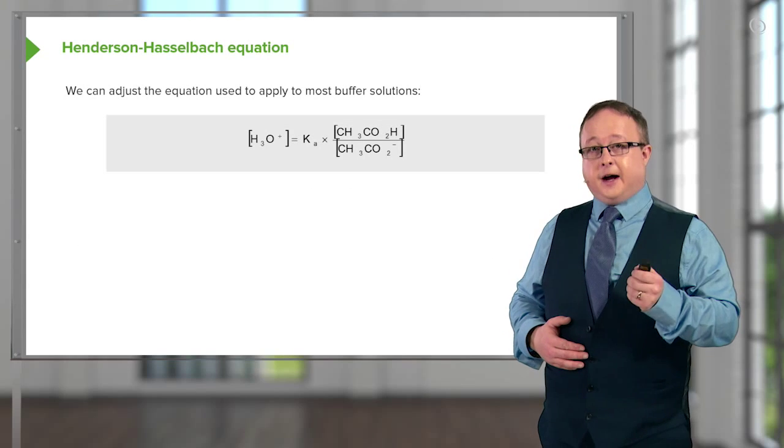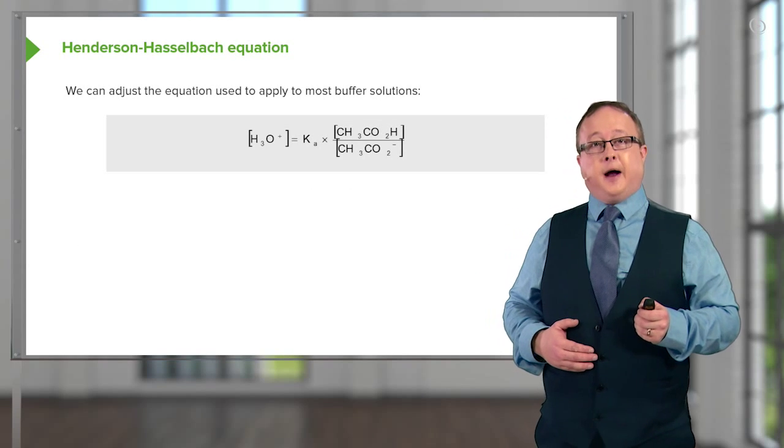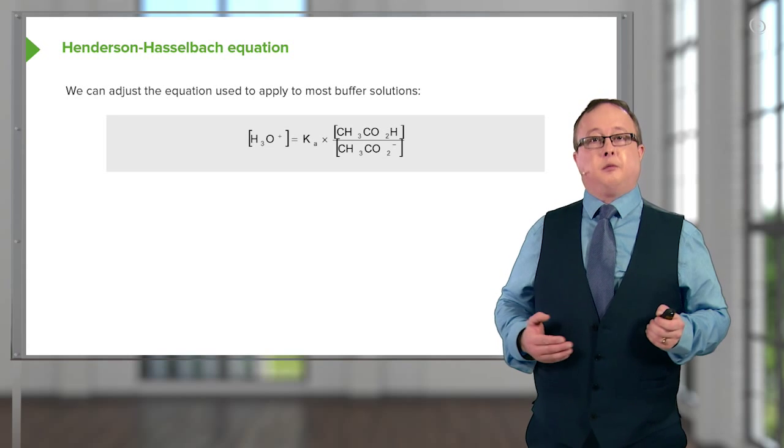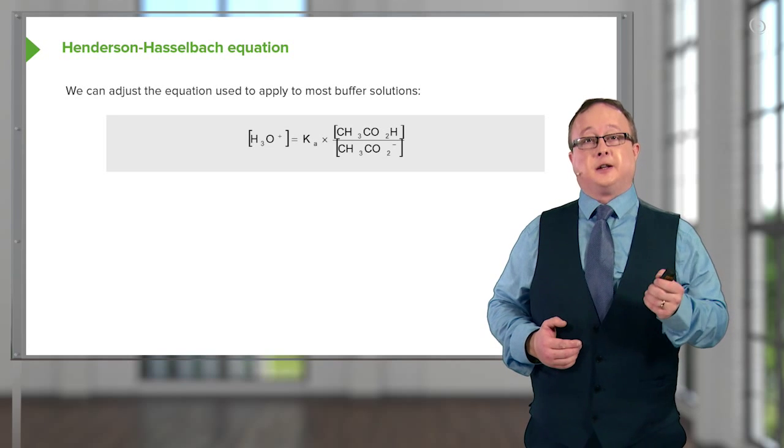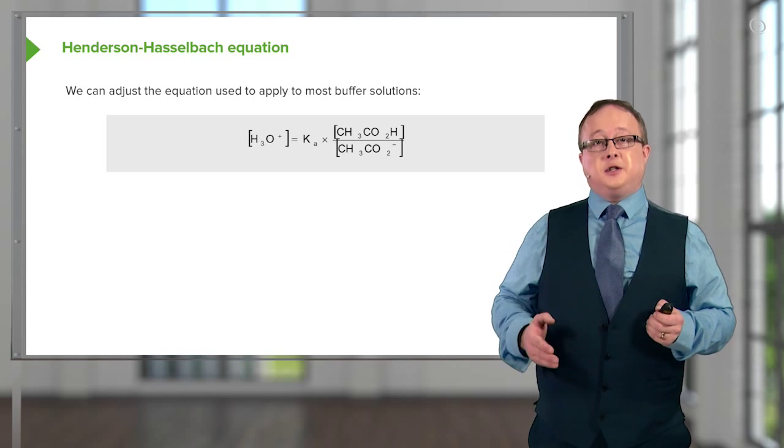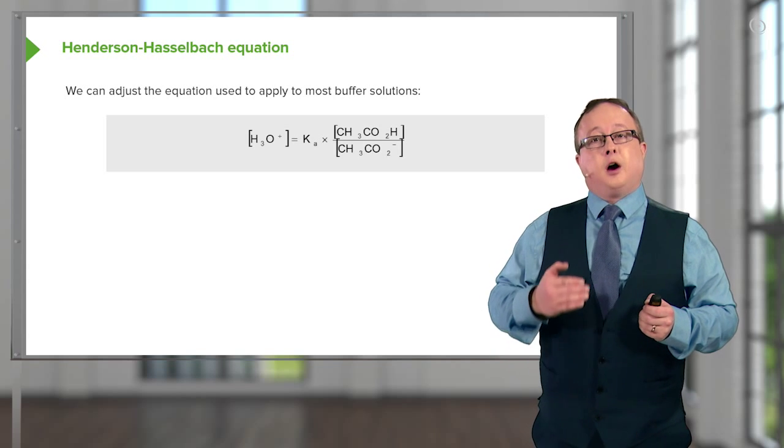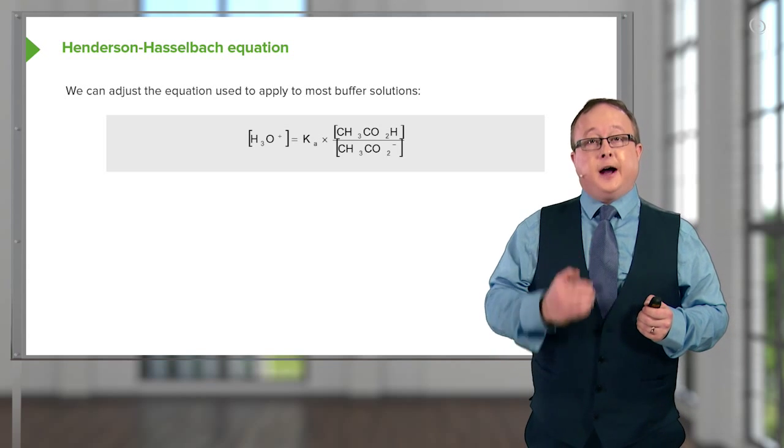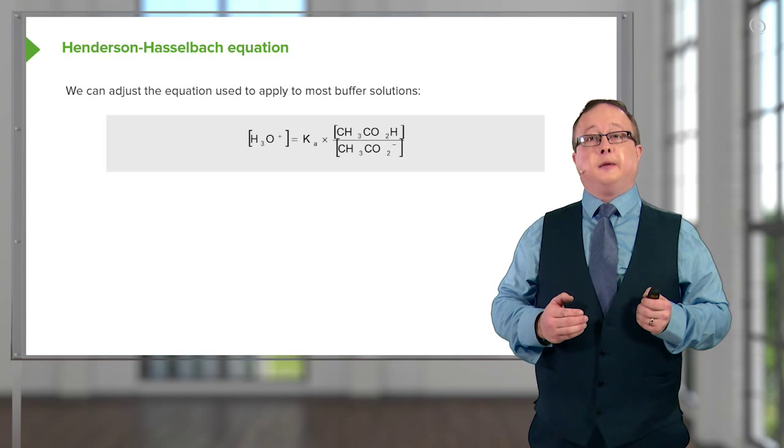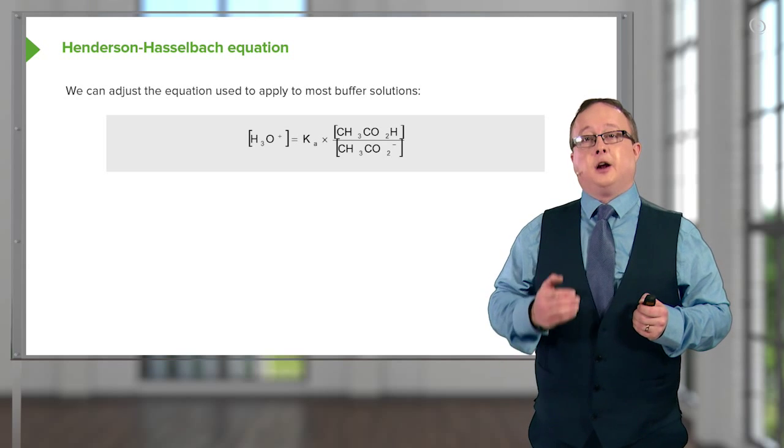Right. Okay. So let's bring this into play. How does it work and what are the assumptions that we make when we do these reactions, when we set these buffers up? We can adjust the equation to actually work out what the concentration of H+, therefore what the pH will be, by virtue of assuming a number of things.